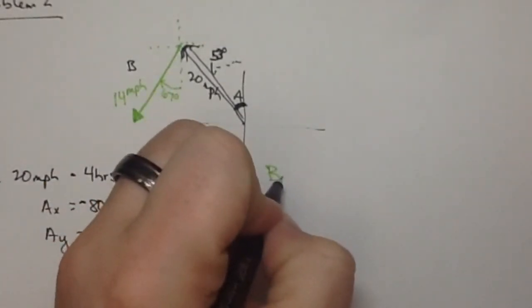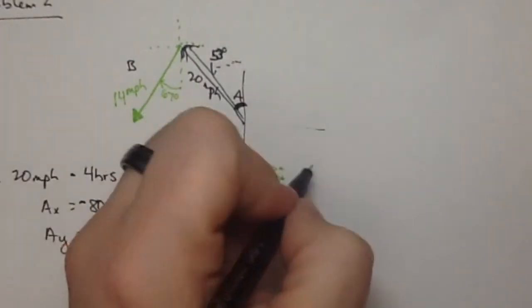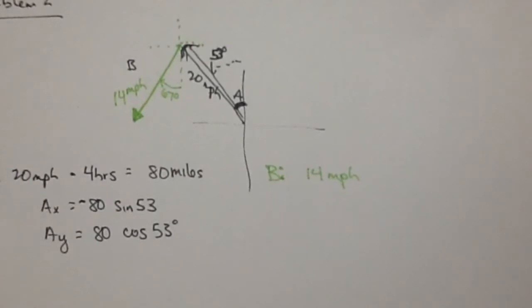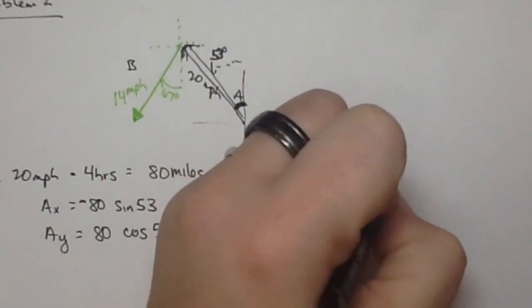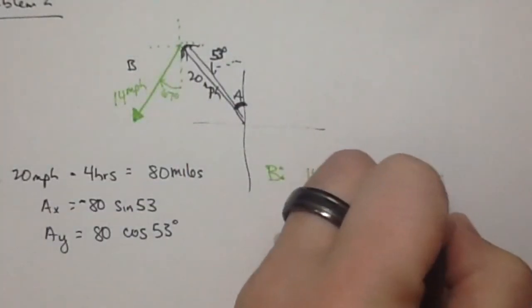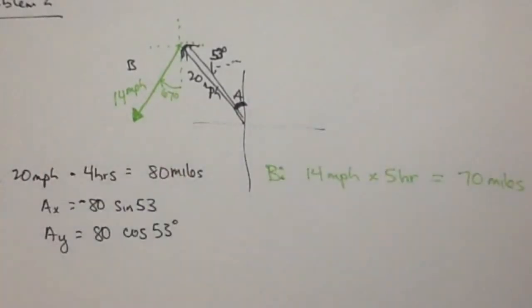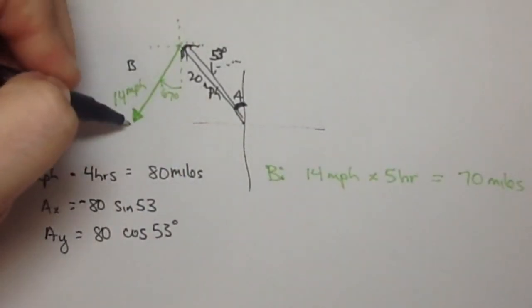So that's the first leg of the journey, 80 miles. The second leg of the journey, we're going 14 miles per hour from noon to 5, 5 hours. 14 miles per hour times 5 hours gives us 70 miles. So that's the magnitude of this displacement.